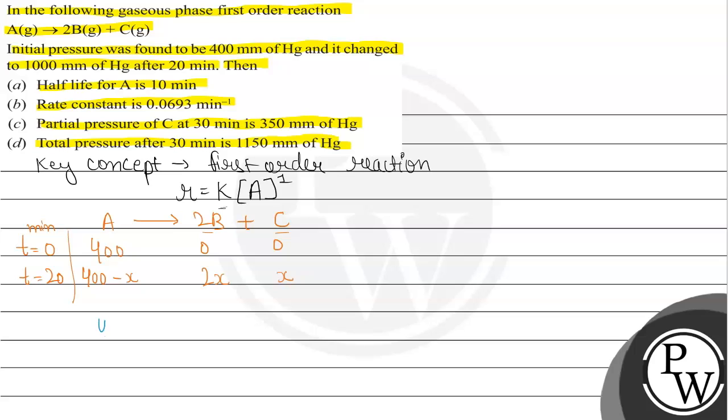So we can say 400 plus minus x plus 2x plus x will be equal to 1000. So this got cancelled. So we have 300. So we have pressure that is 300 mm of Hg. And from this, we will find rate constant.